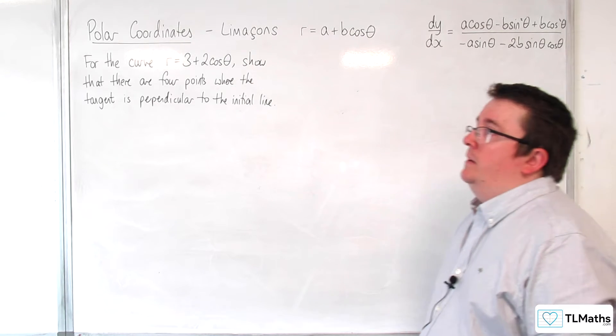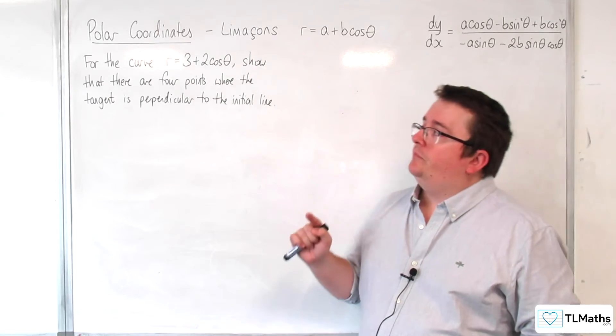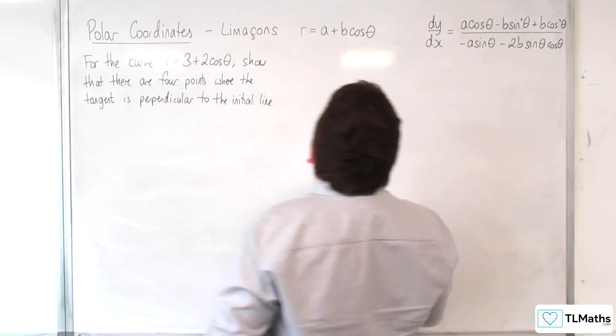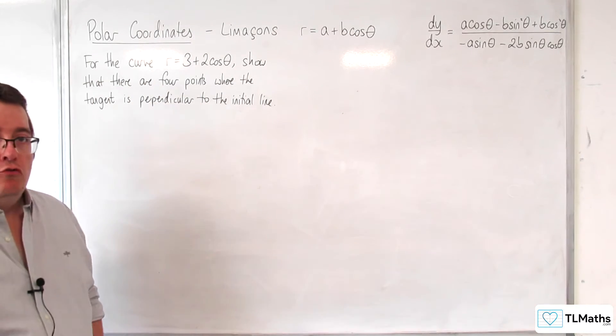So that would mean that the gradient of the tangent is infinite at those points, and so what we would need is the denominator of dy by dx to be equal to 0.